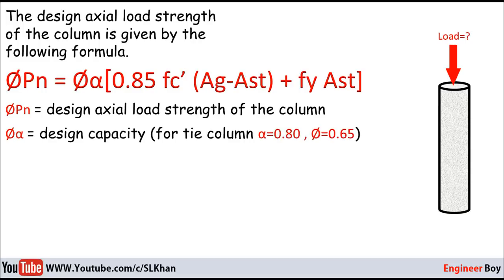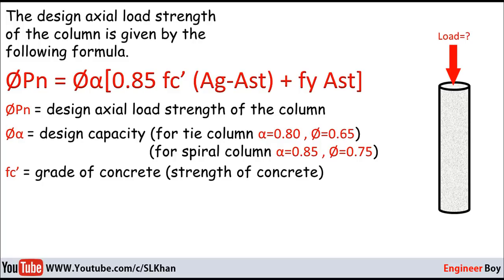Φ and α are the design capacities. For tie column we can use α = 0.80 and Φ = 0.65. For spiral column you can use α = 0.85 and Φ = 0.75.